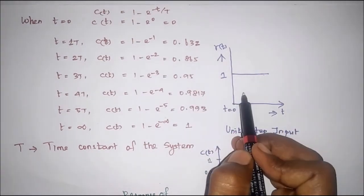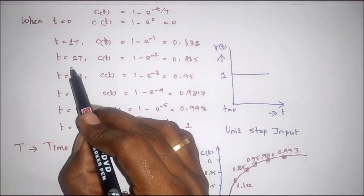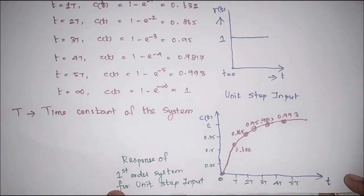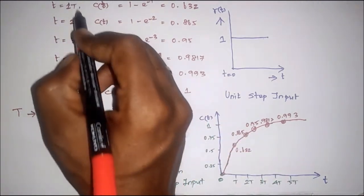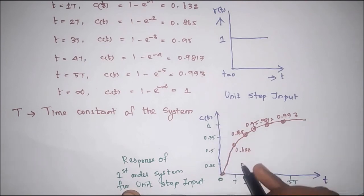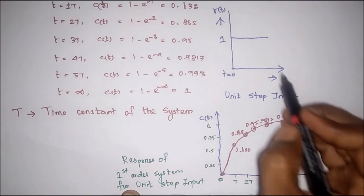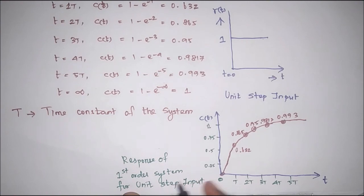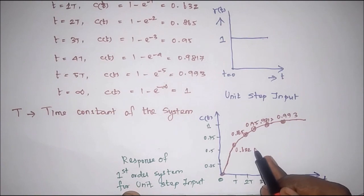For this unit step input, we plot a graph with time on the x-axis and response on the y-axis. Using the calculated time values and their corresponding responses, we plot the graph to get the response curve. This is the unit step input and this is the response of the first order system for the unit step input.